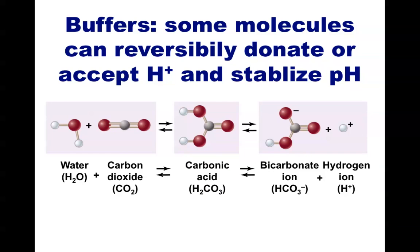One example, found in our own blood, is carbonic acid. If the pH of our blood starts to rise, in other words, the hydrogen ion concentration begins to drop, carbonic acid can convert to a bicarbonate ion and donate a hydrogen ion. This donated hydrogen ion will help keep the pH at the correct level.